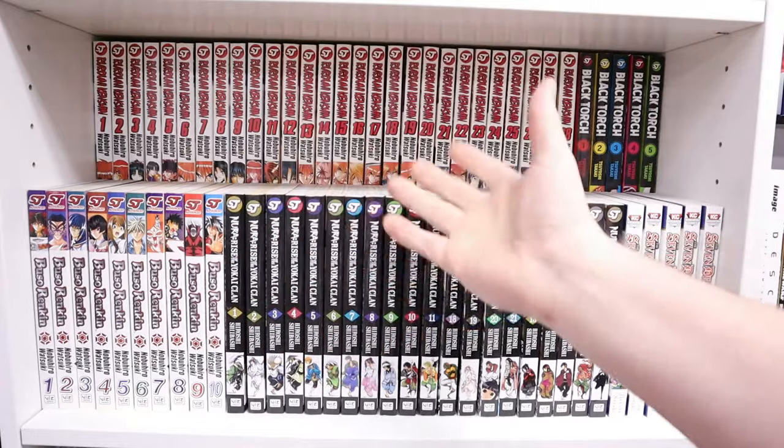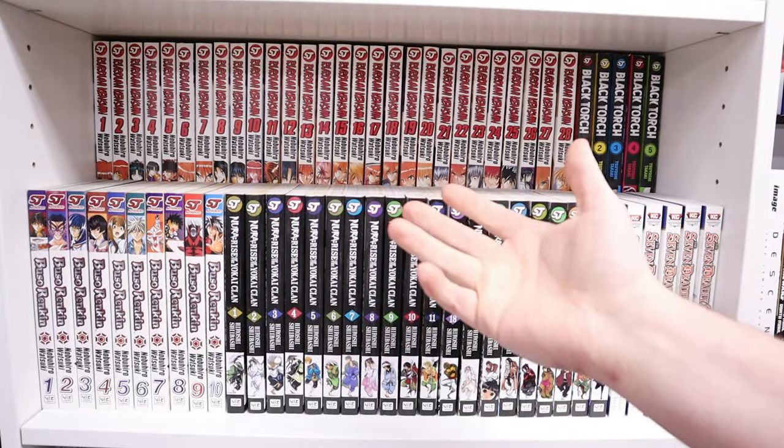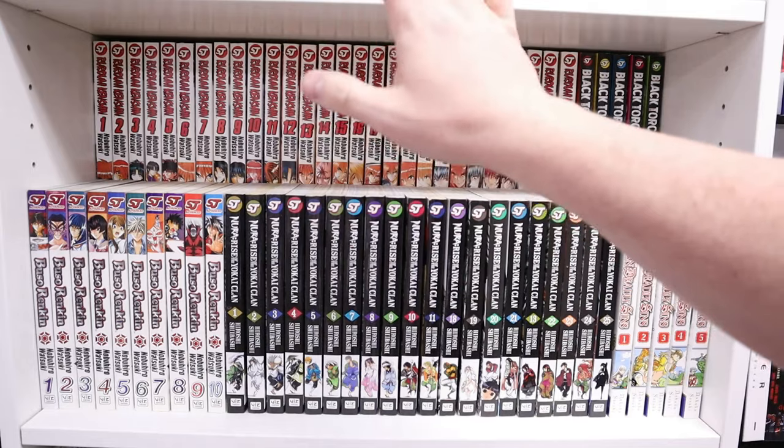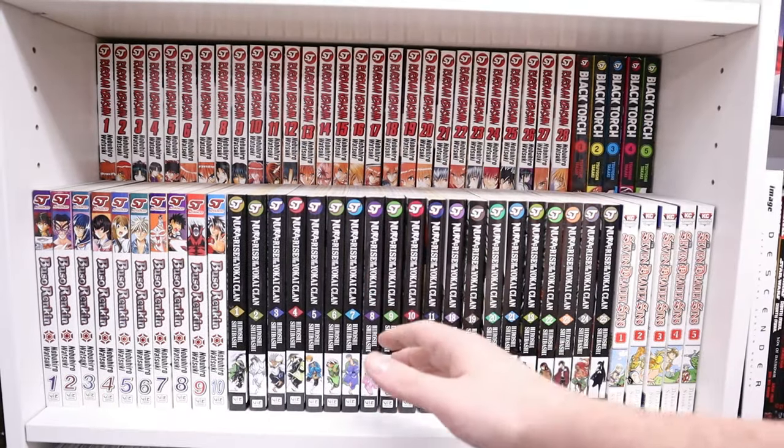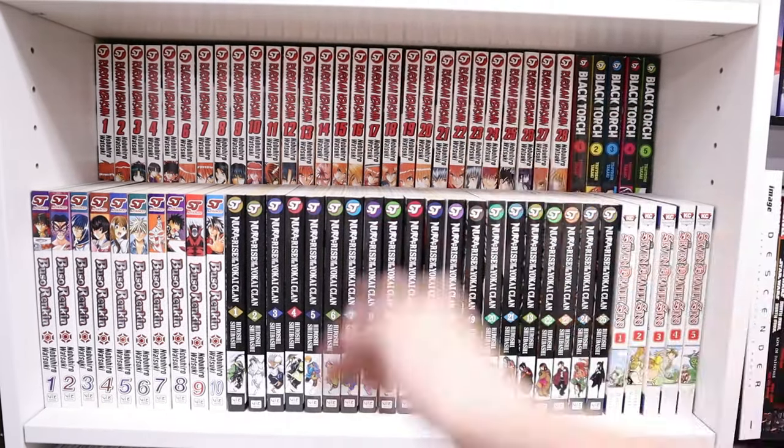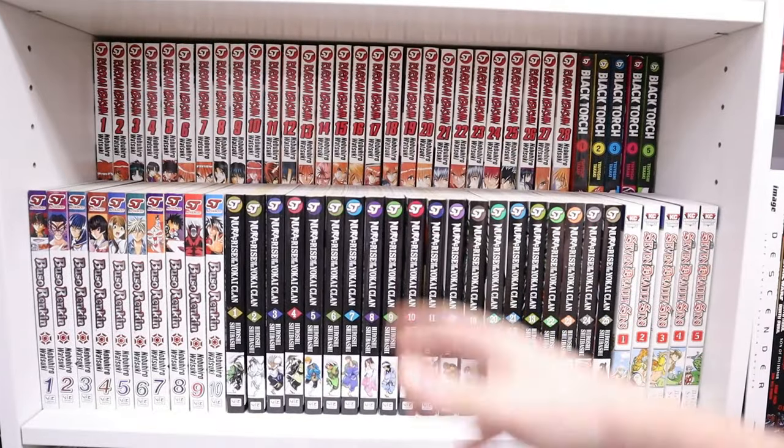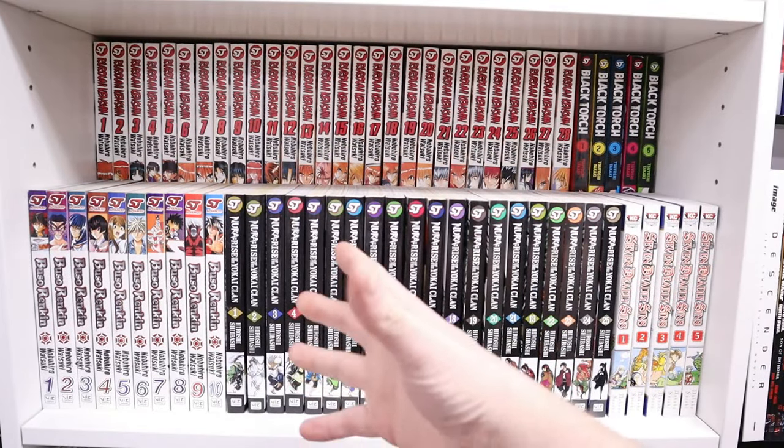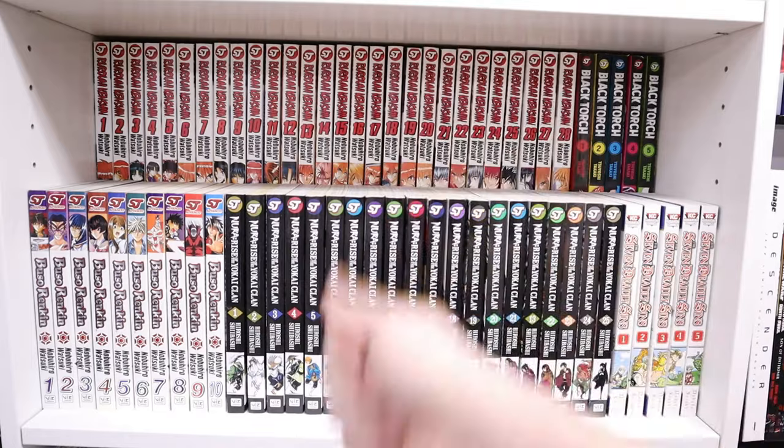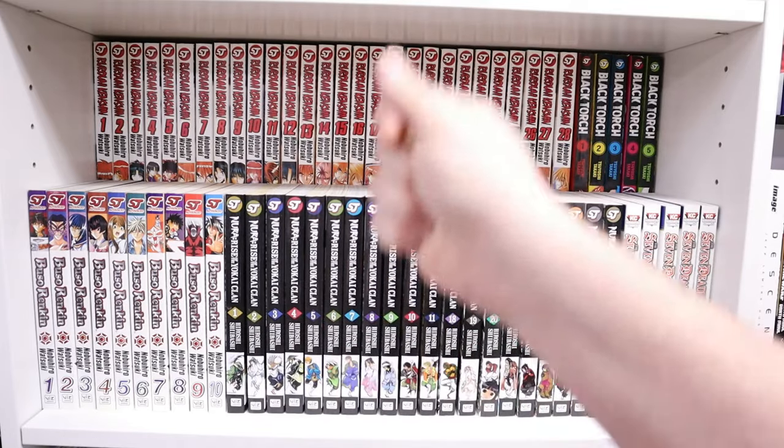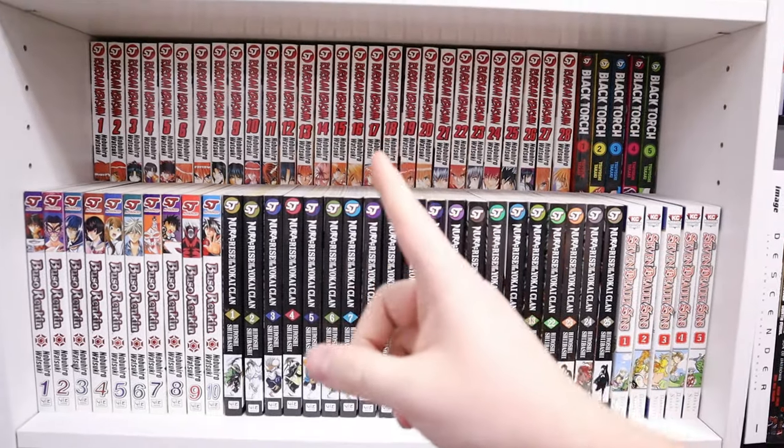This is a cheap IKEA Billy knockoff that you can get from Target for thirty dollars and it works pretty well. But these riser shelves will work for any shelves. Like I said, a lot of you out there have the IKEA Billy shelves and these work just as good on those shelves and they save you money.